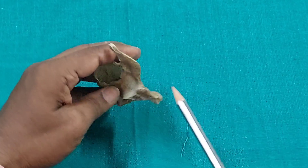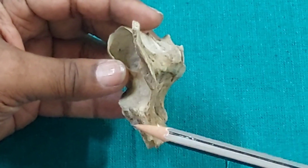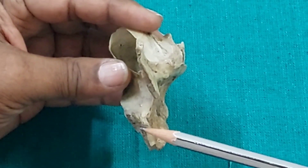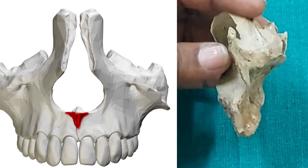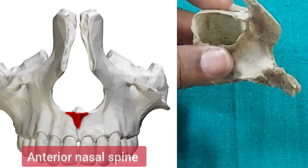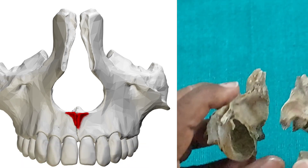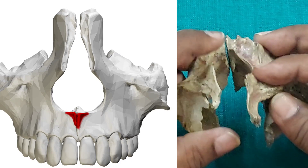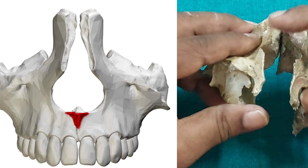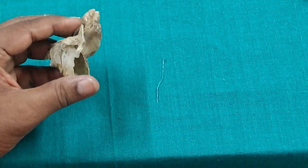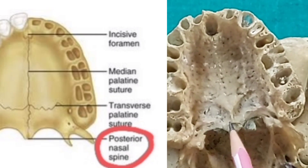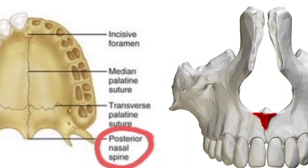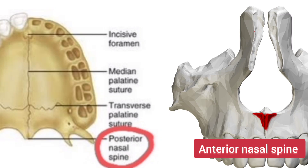The anterior nasal spine is formed where the lower end of the nasal notch on each side meets and projects forward. The maxilla of the left and right sides articulate to form this spine. In contrast, the posterior nasal spine is formed by the horizontal process of the palatine bone.